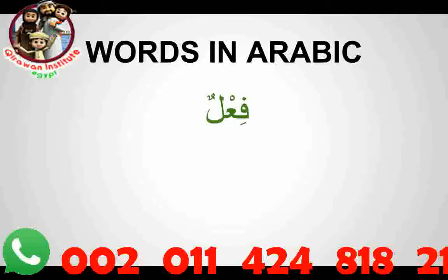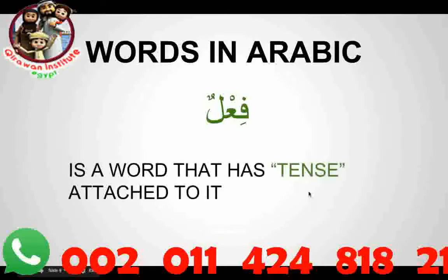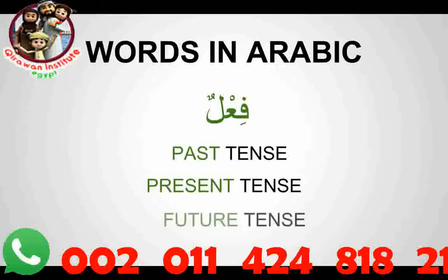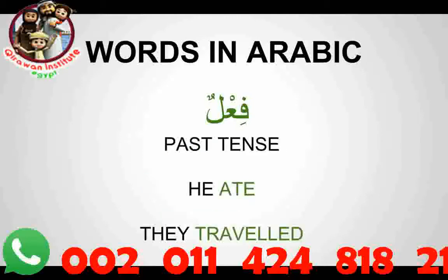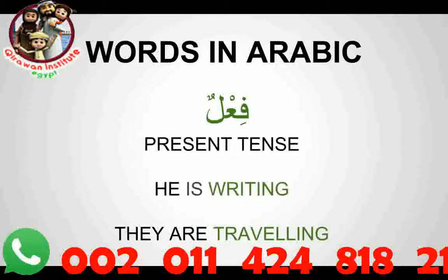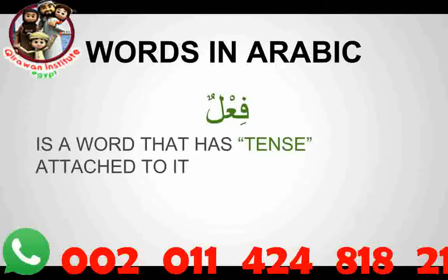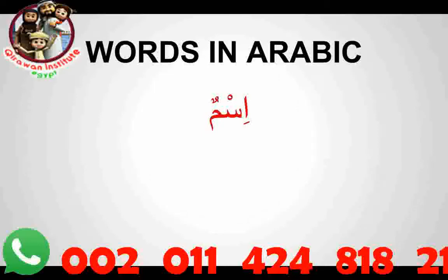Coming to Fi'al — what is Fi'al in Arabic? It is a word in which a tense is attached to it. The tenses are past tense, present tense, and future tense. For past tense: 'he ate,' 'they traveled' — actions that were done sometime before. For present tense: 'he is writing,' 'they are traveling.' For future tense: 'he will be writing,' 'they will be traveling.' So Fi'al is a word in which you can find a tense — past, present, or future.